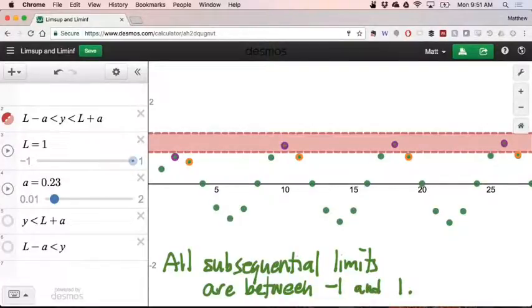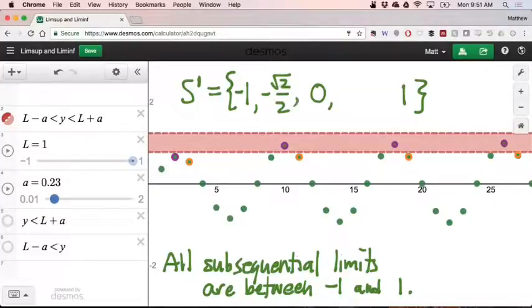In fact, we could even just write out what the set of all of its subsequential limits are. We call that set S prime, the subsequential limit set for this sequence. So we found that 0 is an example. We found that 1 is an example. And I think it's not too much of a challenge to convince yourself that negative 1 is also an example. And then plus and minus radical 2 over 2 are also examples. But I think this is it. I think these are going to be the only five limits of subsequences within this sequence. So we call that the subsequential limit set for the sequence SN.